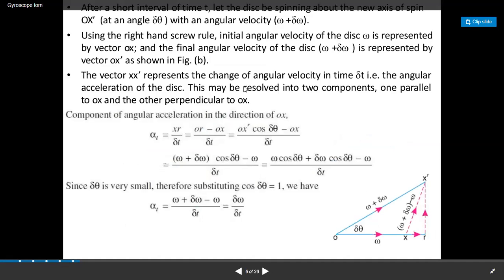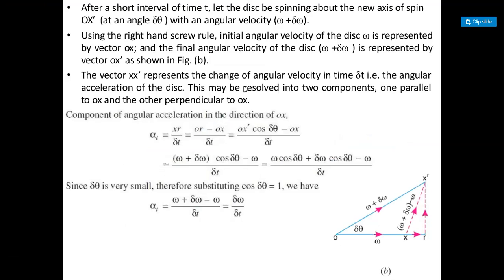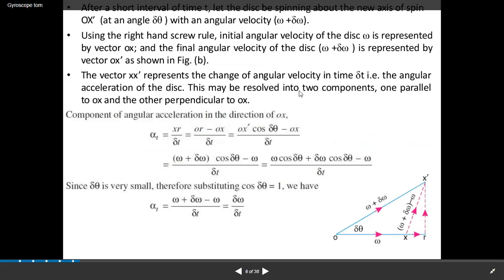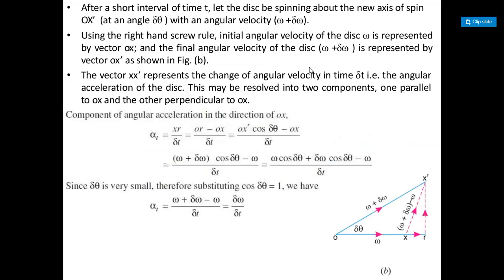After a short interval of time, the disc will be spinning about the new axis of spin x-dash with the angular velocity of omega plus delta omega. Using the right-hand screw rule, the initial angular velocity omega is represented by vector OX, and the final angular velocity omega plus delta omega is represented by OX-dash.